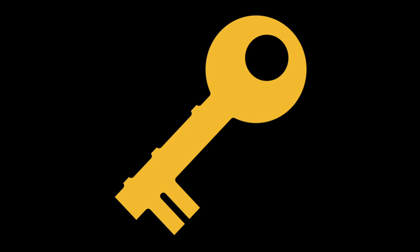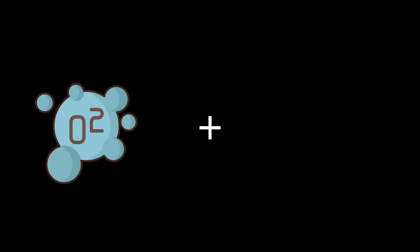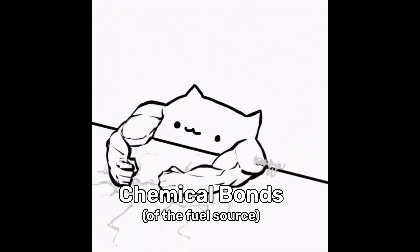Think of oxygen as a key that unlocks the energy stored in fuel. When combined with heat, like a spark, it breaks the first few chemical bonds, releasing energy in the form of heat and light.